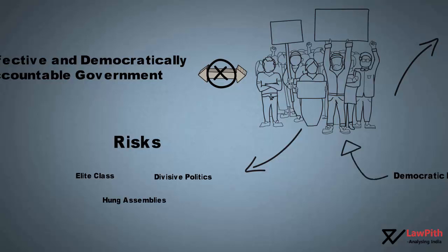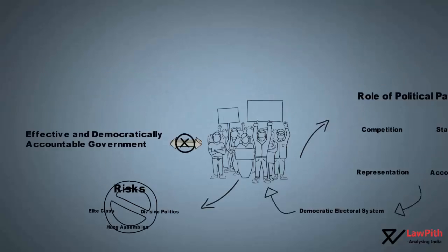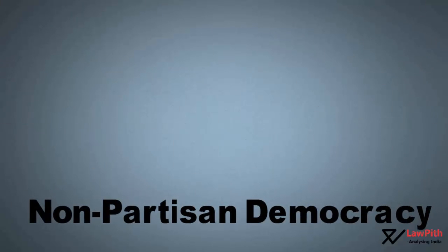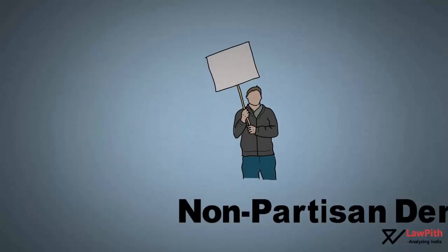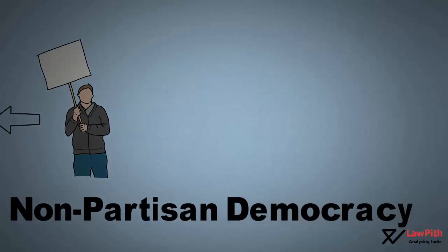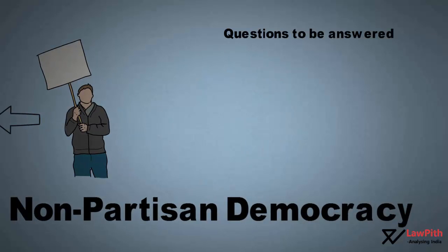If we are to eliminate these risks, we should move towards a democratic system without political parties. In such a system, there will only be independent candidates. The elected candidates can then fulfil their lawmaking functions without any affiliation to a party.